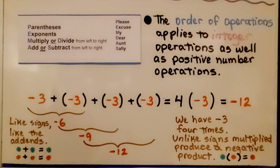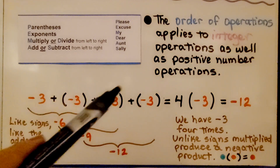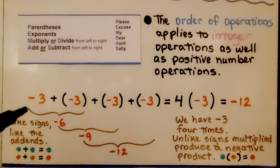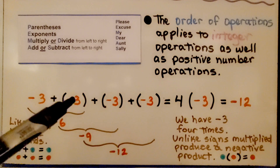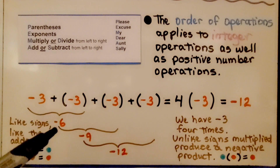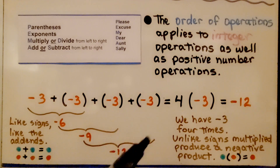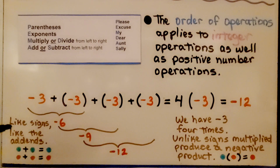If we add them from left to right, they're all negative — we have like signs being added. Negative 3 plus negative 3 equals negative 6. Add another negative 3, we're at negative 9. Add the last negative 3, we're at negative 12. So if they have like signs, the sign of the sum will be like the addends.